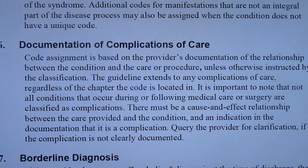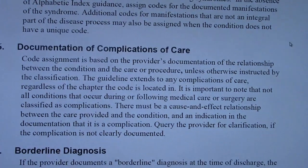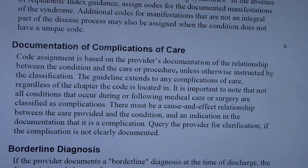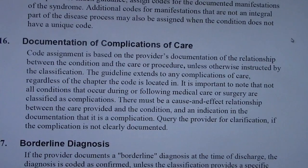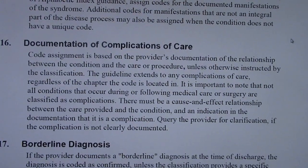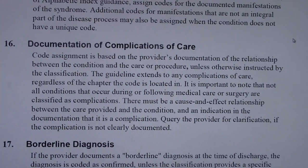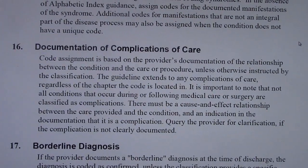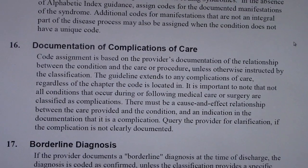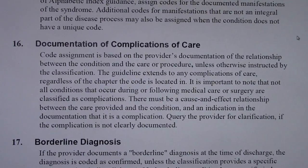Documentation of complications of care. Code assignment is based on the provider's documentation of the relationship between the condition and the care or procedure, unless otherwise instructed by the classification. The guideline extends to any complications of care regardless of the chapter the code is located in. It is important to note that not all conditions that occur during or following medical care or surgery are classified as complications. There must be a cause and effect relationship between the care provided and the condition, and an indication in the documentation that it is a complication. Query the provider for clarification if the complication is not clearly documented.